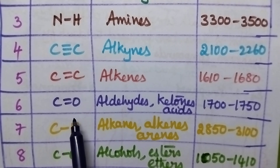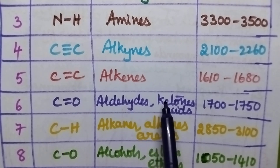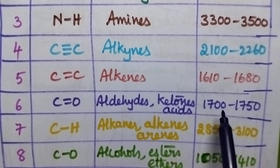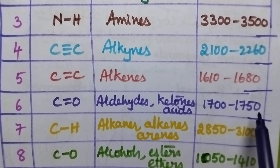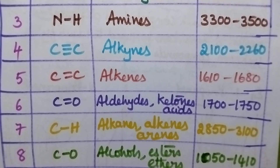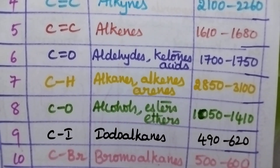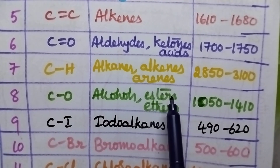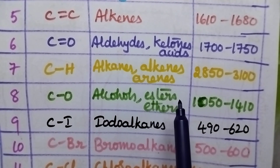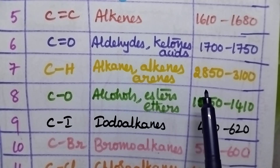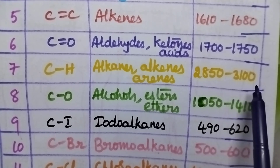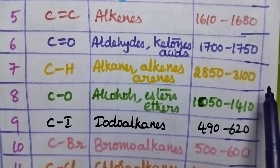C double bond O group present in aldehydes, ketones and acids will show a characteristic absorption around 1700 to 1750 cm inverse. CH bond present in alkanes, alkenes and arenes will show a characteristic absorption around 2850 to 3100 cm inverse.